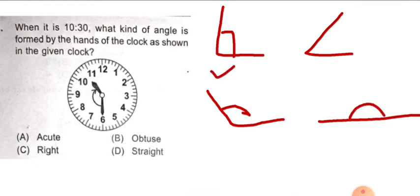Exactly 90 degree is right angle, less than 90 degree is acute angle, more than 90 degree is obtuse angle, and 180 degree is the straight angle. So we have to remember this.